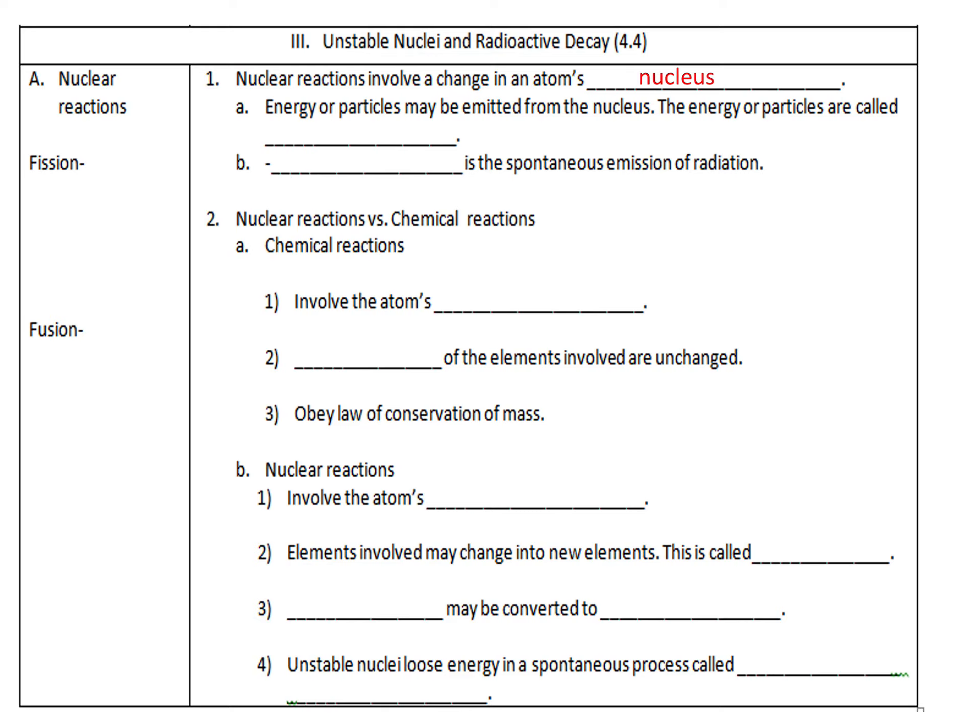energy or particles can be emitted from the nucleus. The nucleus sometimes can just break apart, especially in really big atoms. The energy or the particles released are called radiation. Radioactivity is the spontaneous emission of radiation.